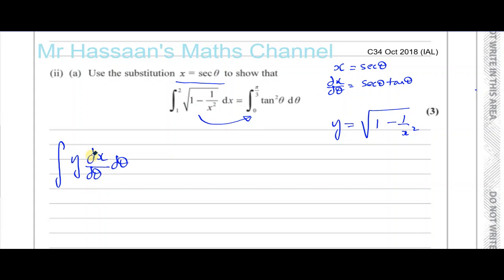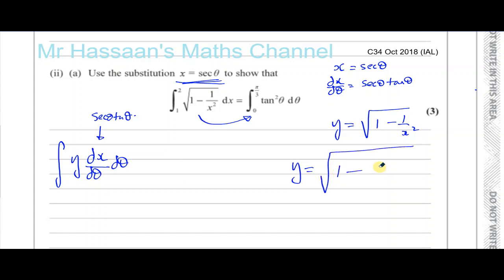So the dx/dθ part I can replace with sec theta tan theta. Now I've got to think about how I'm going to replace y, because I want everything in terms of theta — no x's or y's. So I want to replace y, which is the square root of 1 minus 1 over x squared, with something in terms of theta. Using x equals sec theta, y equals the square root of 1 minus 1 over sec squared theta.